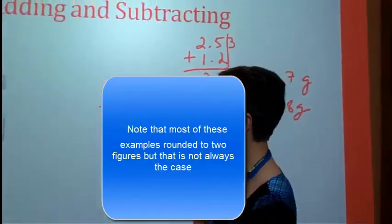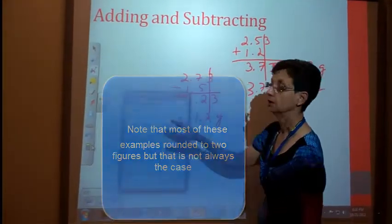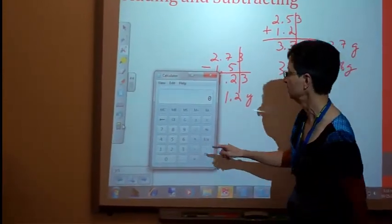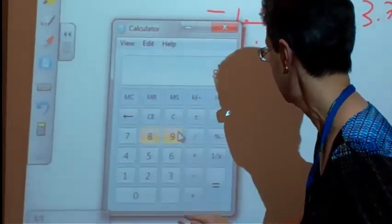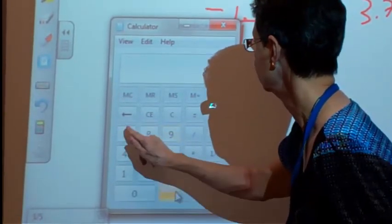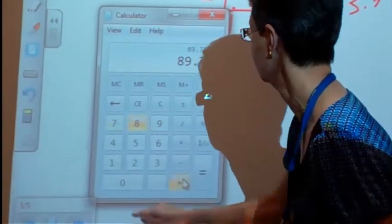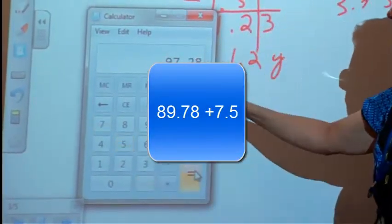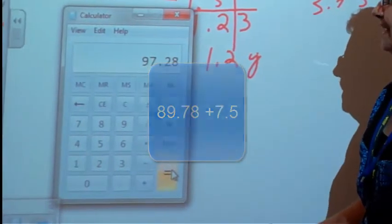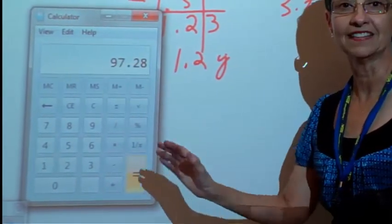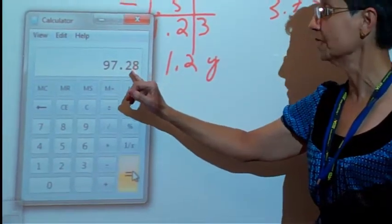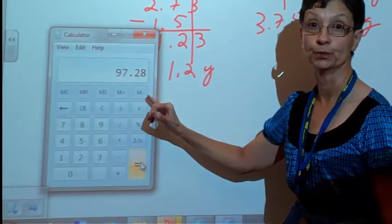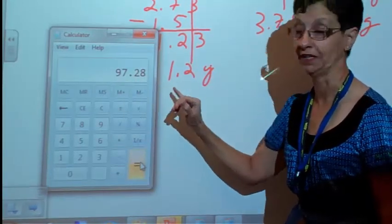When you're using a calculator, you are going to do the same thing because your calculator will give you the wrong answer. Say we are adding 89.78 plus 7.5 equals. Your calculator gives you 97.28. However, my least accurate measurement was to the 10th place. You must round, so therefore, the measurement is going to be 97.3.